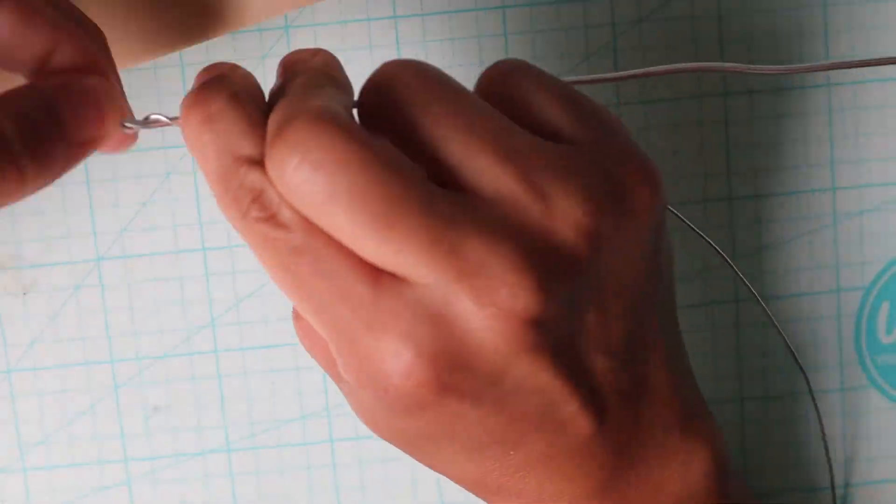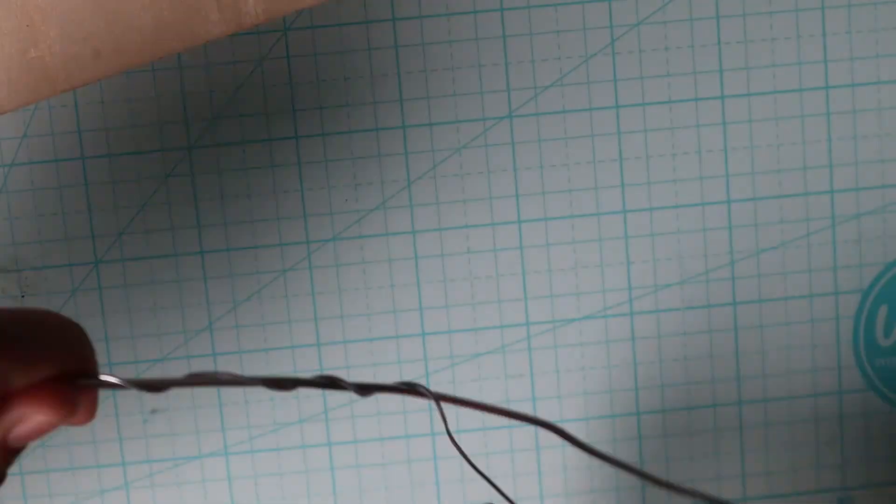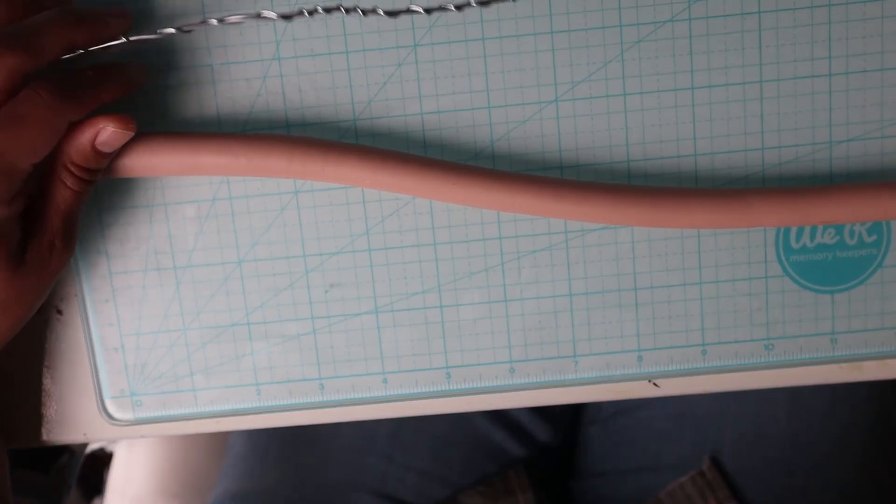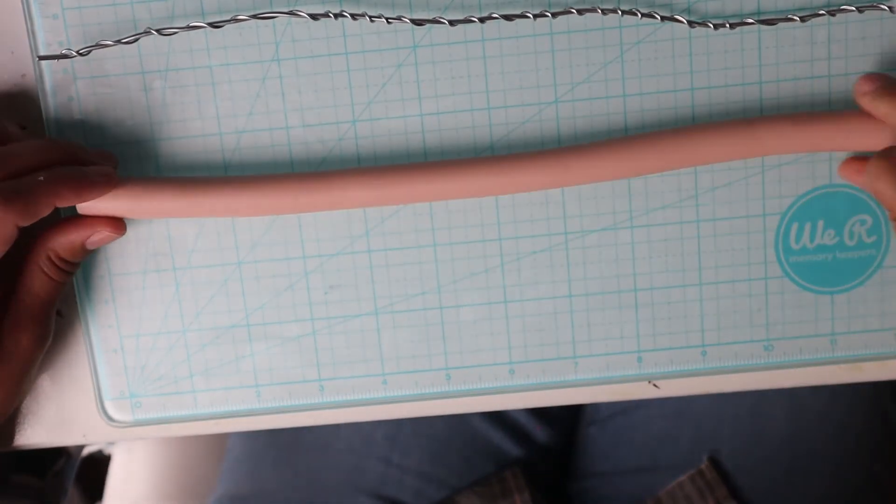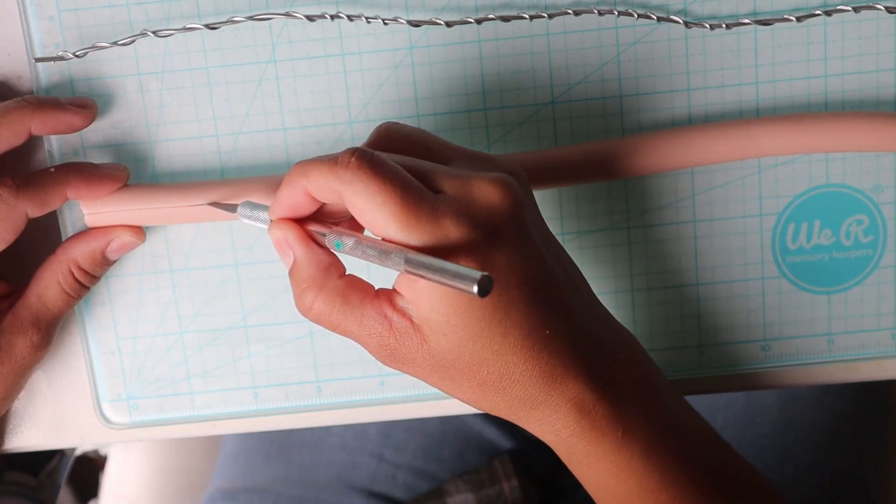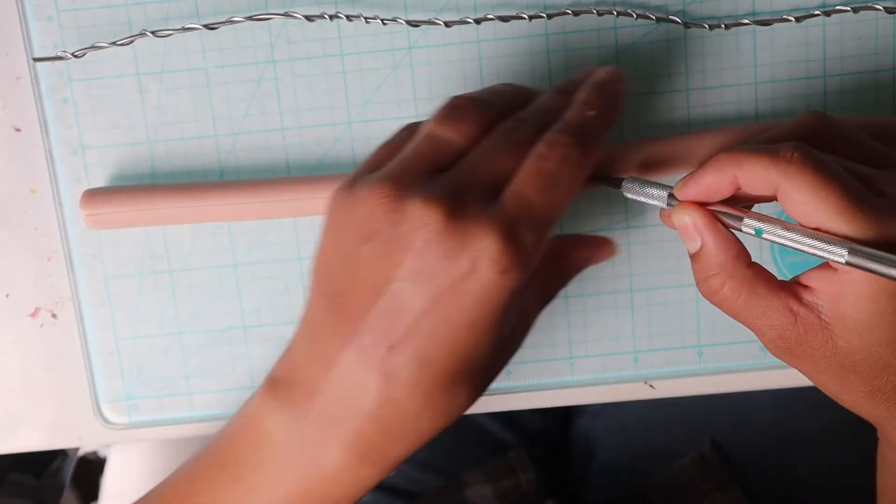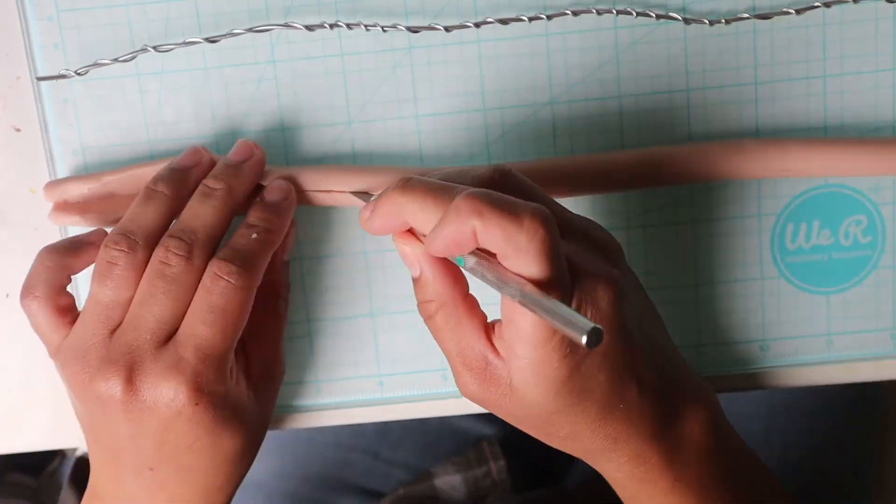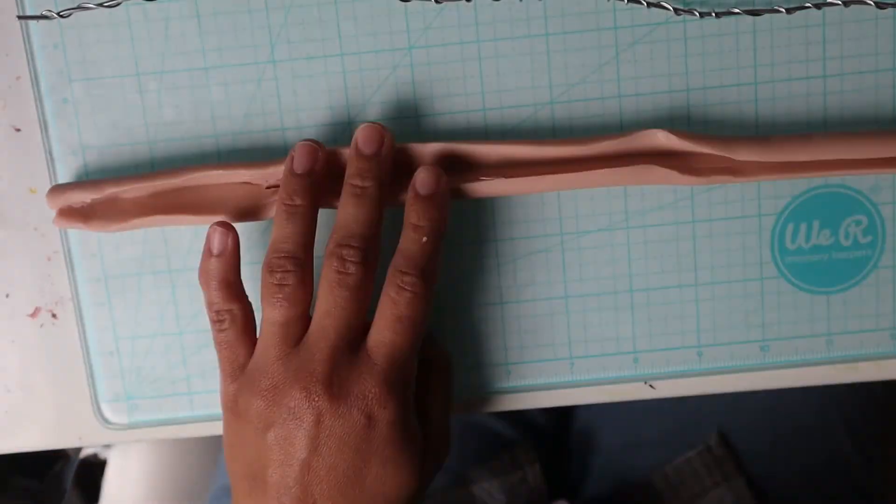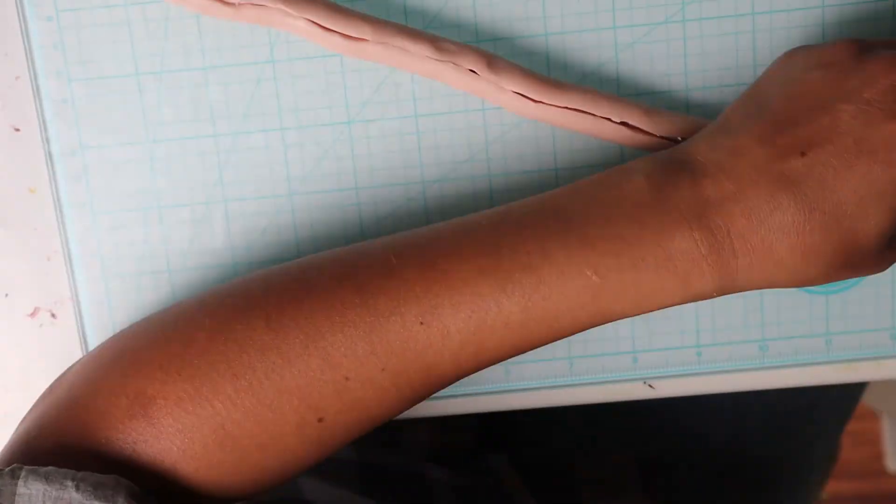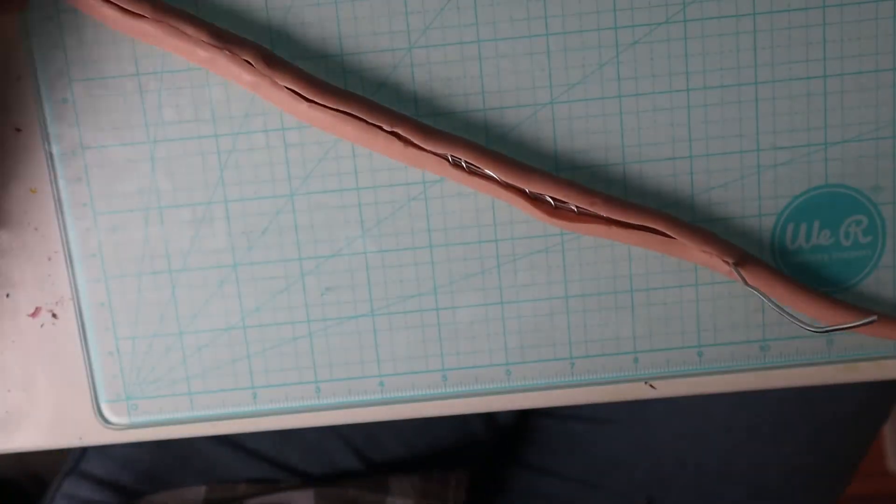We're going to take some armature wire the length that I want the snake to be and wrap some smaller wire around it so that the clay has something to grip. Roll out a giant snake of clay, cut it open with the exacto knife. We don't want to cut it in half, we just want to cut it open so that we can put the wire inside so that it has a nice bendable armature.